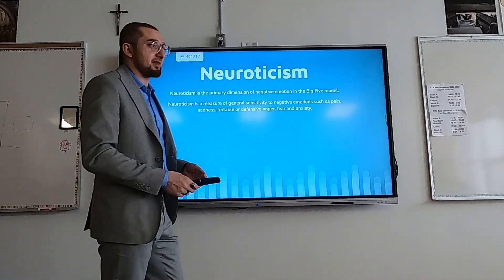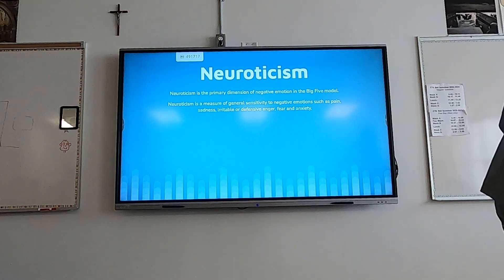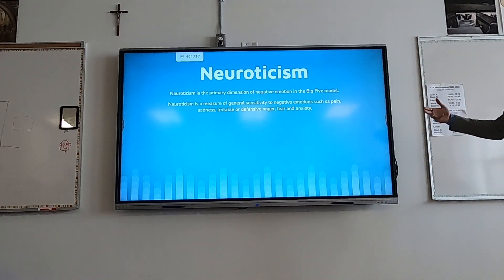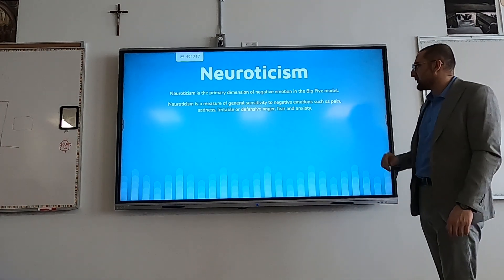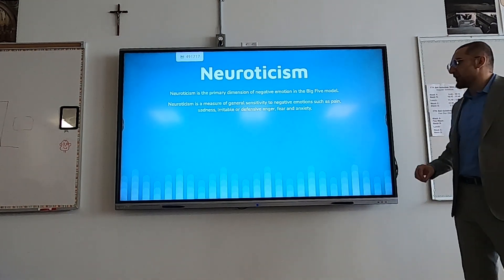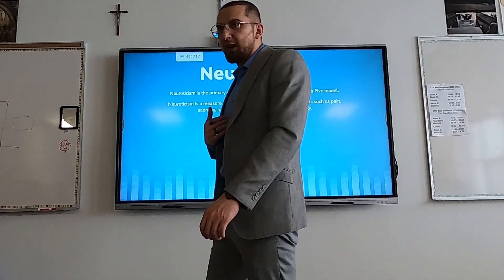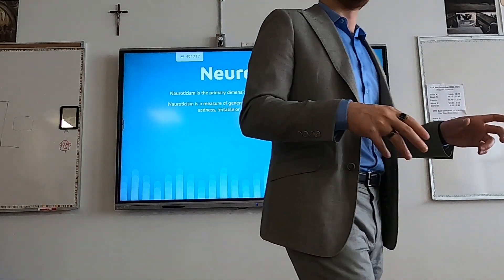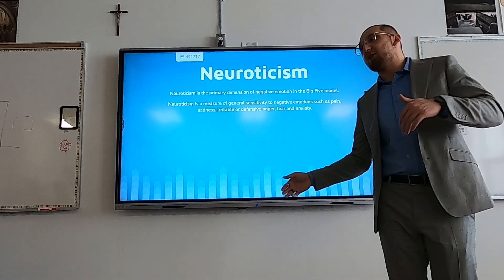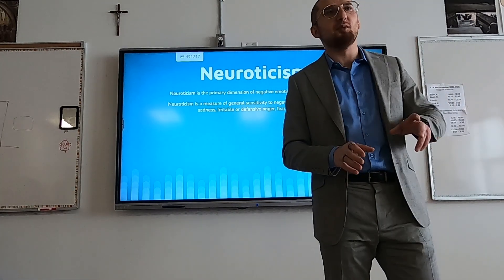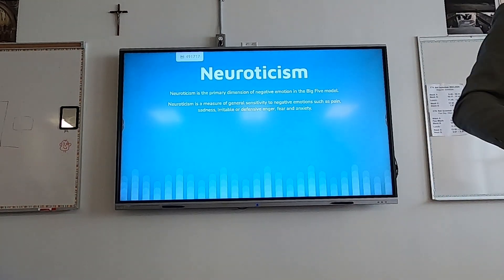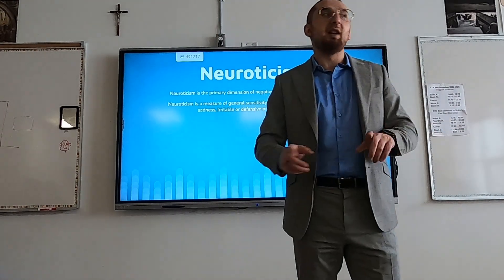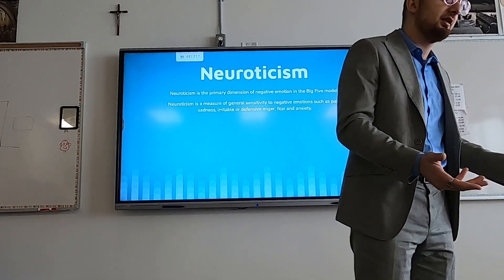The last trait is Neuroticism. If extroversion is positive emotion, neuroticism is the negative emotion — they're on opposites. Neuroticism is a measure of general sensitivity to negative emotions such as pain, sadness, irritable or defensive anger, fear, and anxiety. As a teacher, when I see students with anxiety problems who are always worried about the future, I wonder what their neuroticism level is. For the record, my neuroticism is essentially zero — I really don't experience negative emotion. But some people could be at the hundredth percentile, and they'll see problems everywhere — very likely seeing problems where there aren't any.